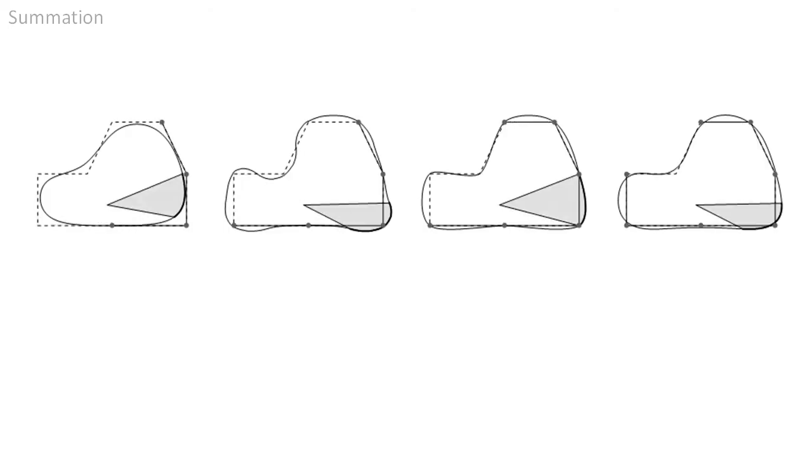Here is how the partition looks like for different subdivision curves. For each initial control point, there is one cone. For primal schemes, the cone is between two control points. For dual subdivision schemes, the cone is centered at a control point.